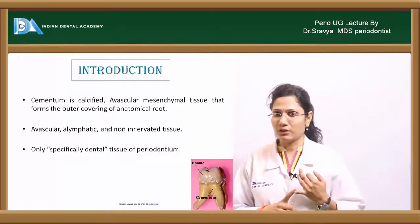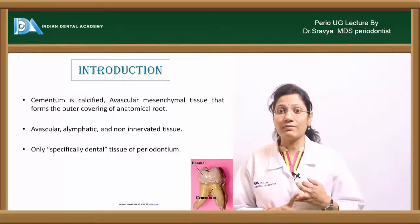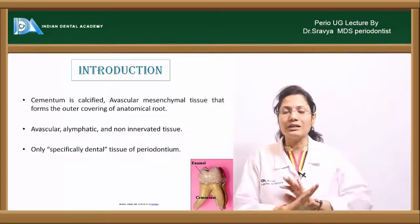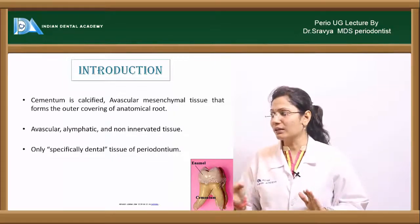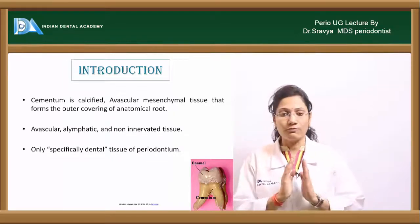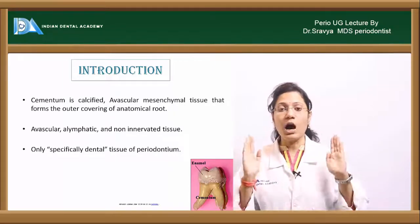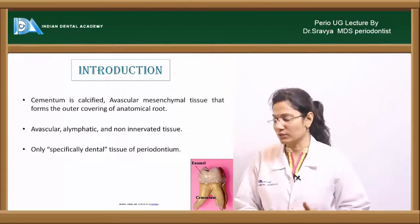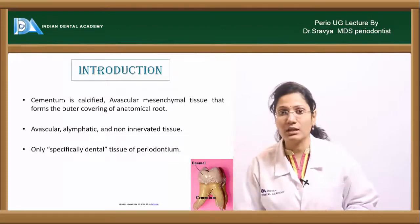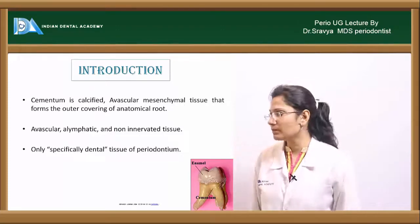Cementum is a calcified tissue. It is avascular, meaning it has no blood supply, and it forms the outer covering of the root surface. That describes cementum.